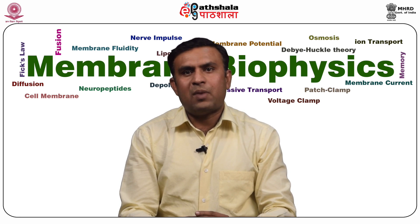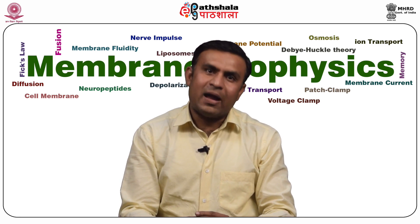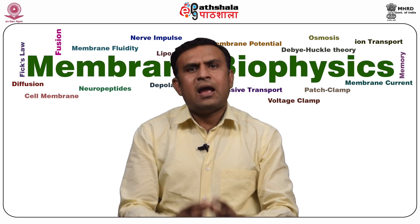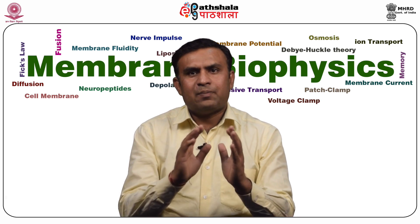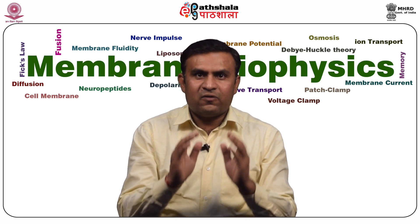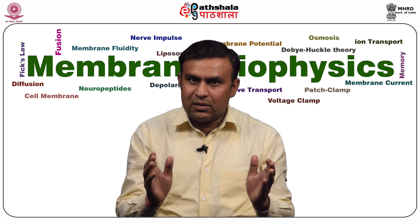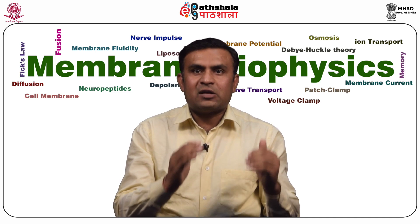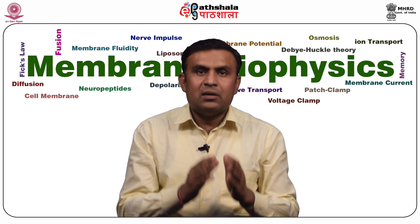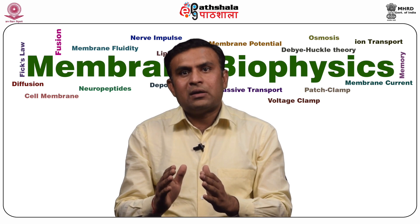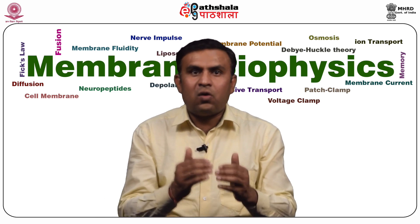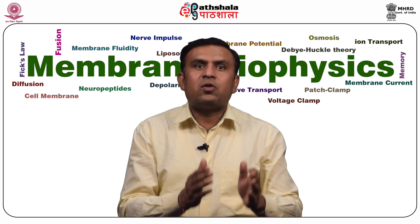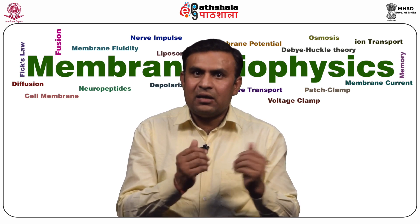Today I am going to talk about the module Transport of Macromolecules from Paper Membrane Transport. As we learnt in the previous module, the plasma membrane of the cell functions as a selectively permeable barrier and allows only small molecules to be freely transported across the membrane. Small molecules and non-polar molecules can easily pass the non-polar bilayer by diffusing through the membrane.